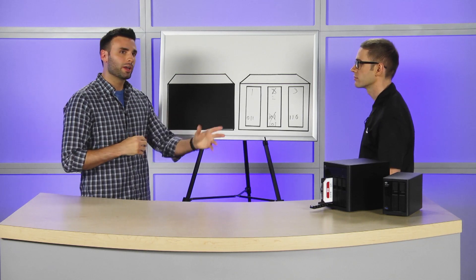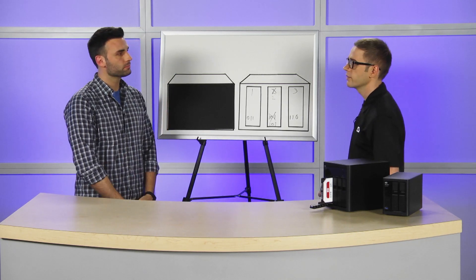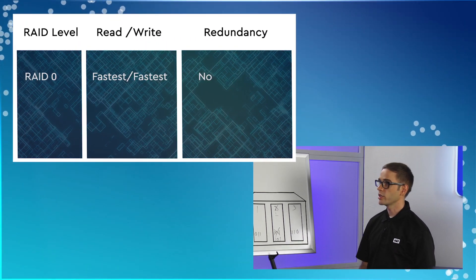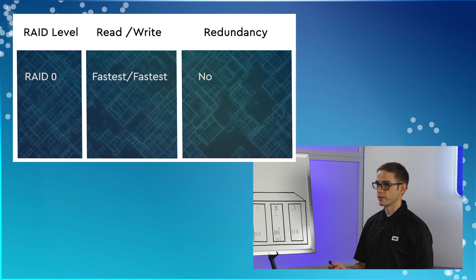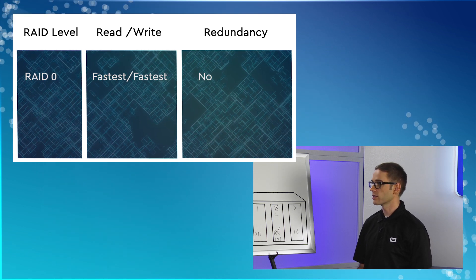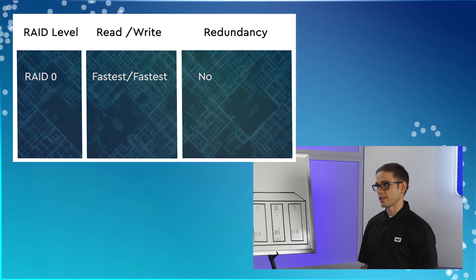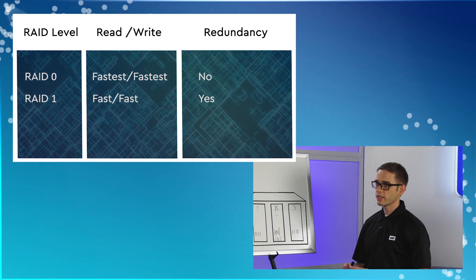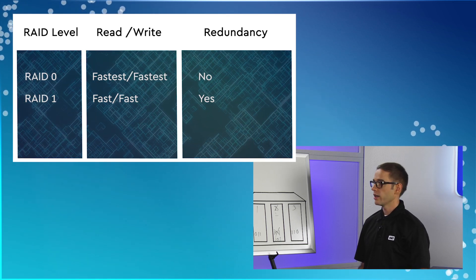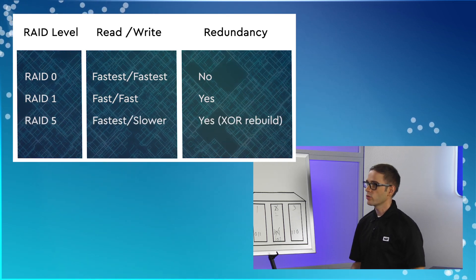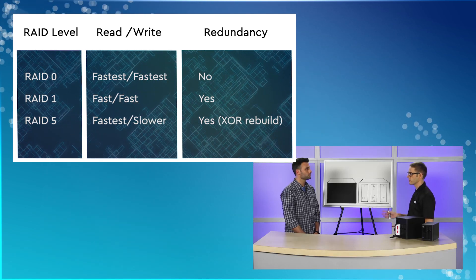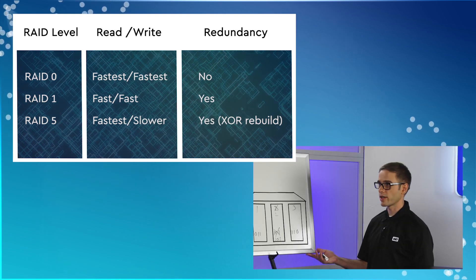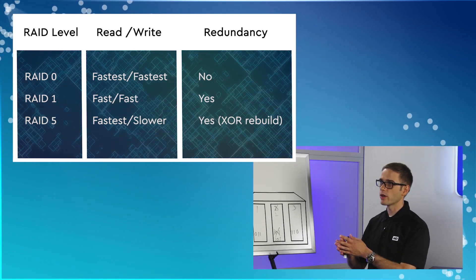Now that we know how they work, how do I know which one is right for me? The difference between them is speed and performance. RAID 0, your stripe, is going to be your fastest — data spread across multiple disks, so reads and writes are very fast. Problem is, no redundancy. RAID 1, your mirror, is not too bad on reads and writes — it's duplicating the data, so it can still be pretty quick. RAID 5 is one where writes are kind of slow because it has to calculate everything being put in there to create that parity bit, but reads are going to be very fast — just like RAID 0, it's reading off multiple disks at once.